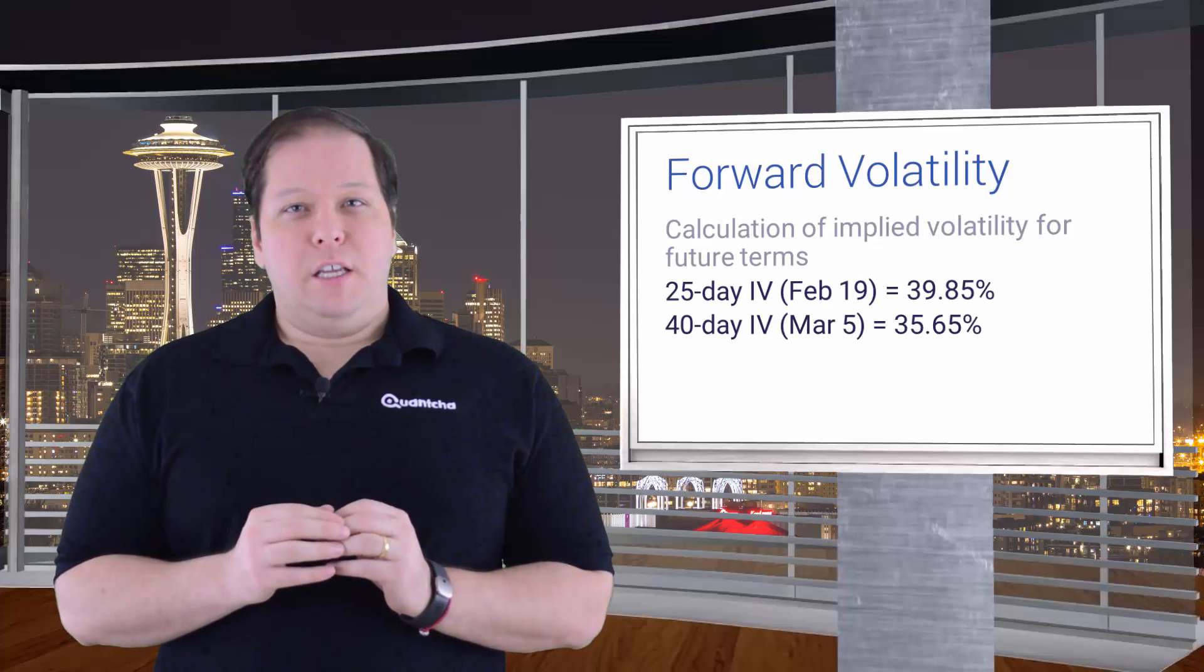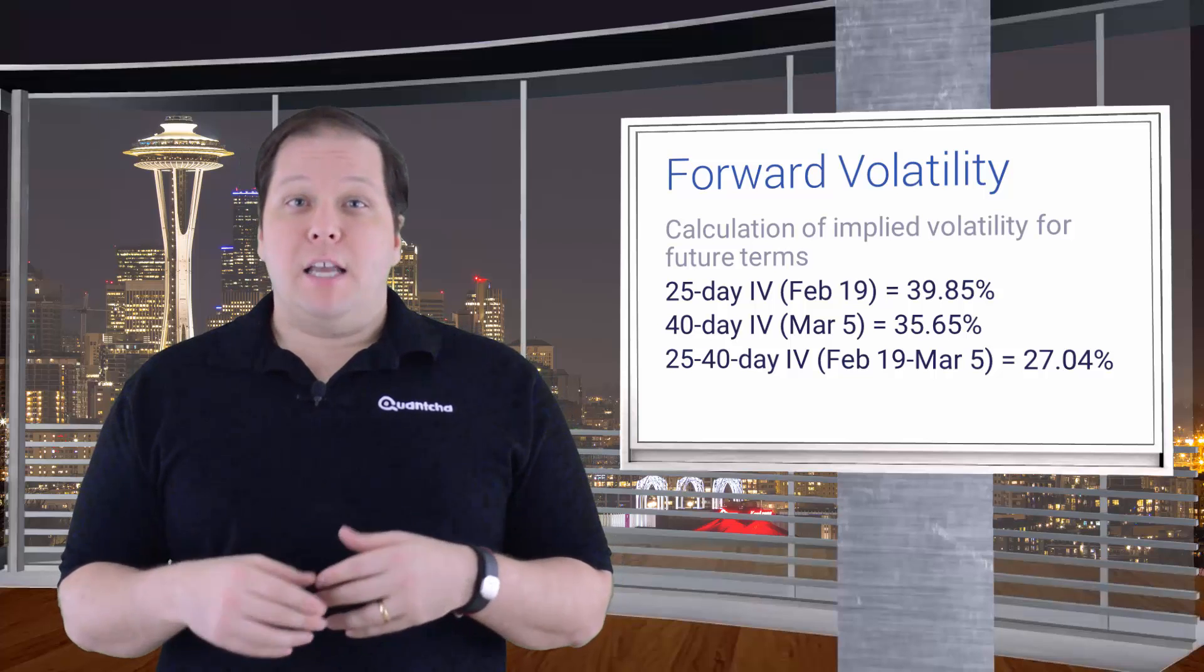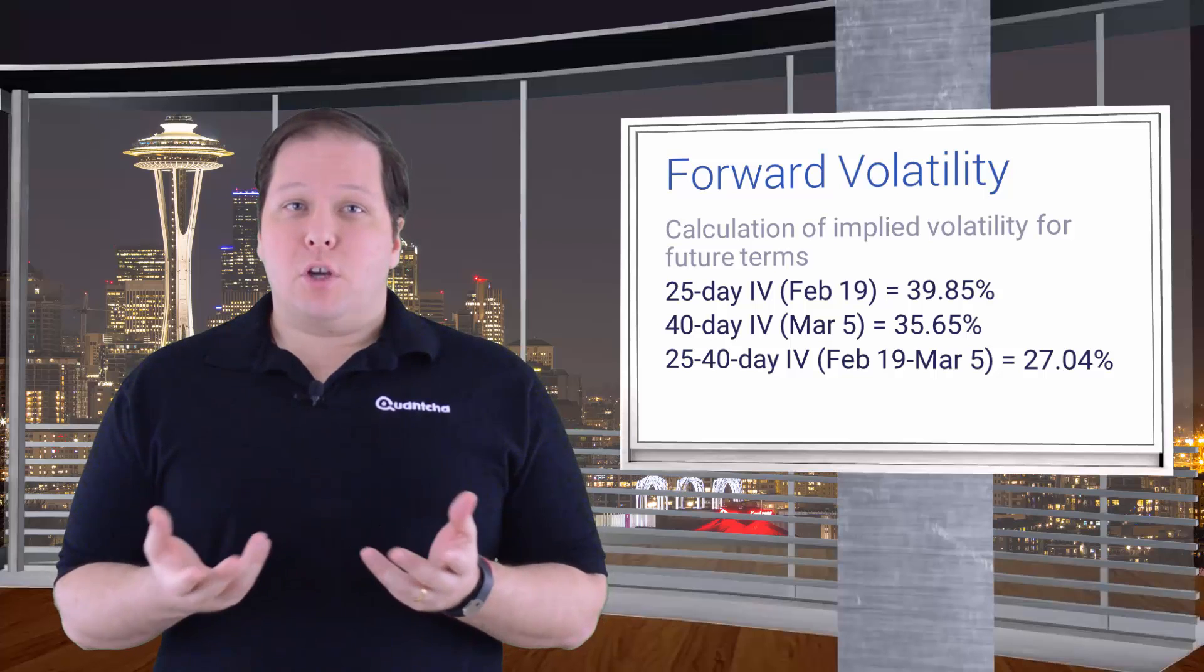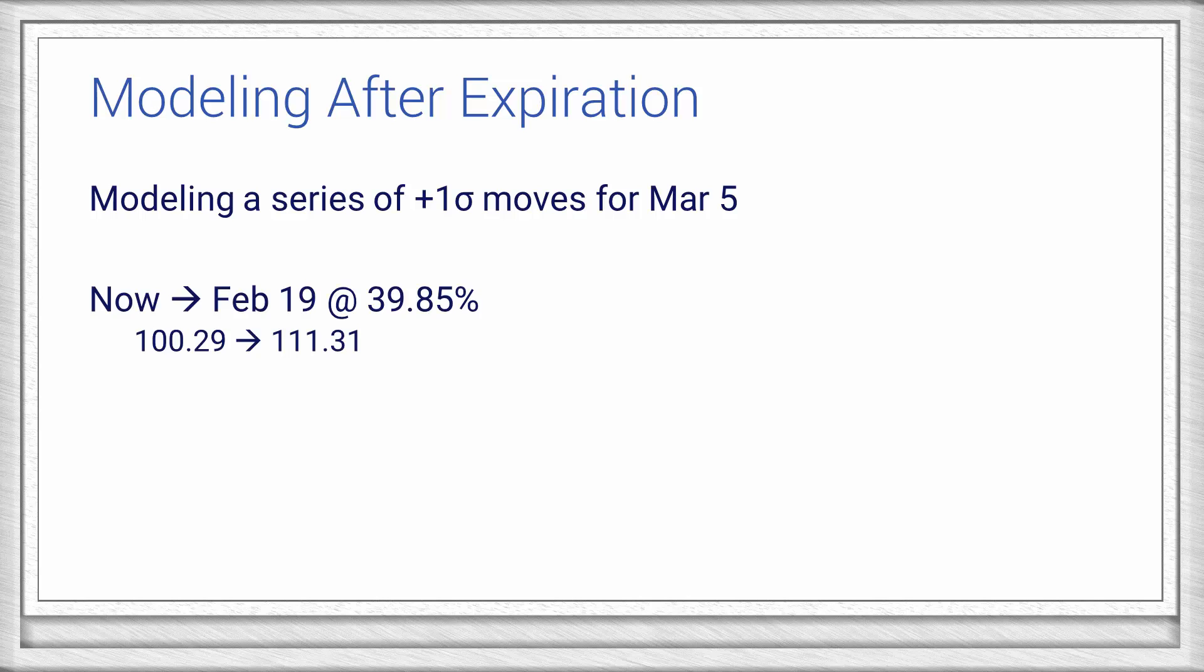With a forward volatility, we can then infer the price distribution for the end of that term relative to any starting price. The forward volatility completes our needs for the current sample. Now let's walk through the process of modeling another price path for evaluation. To keep things easier to understand, we'll work in terms of a single standard deviation move upward in each segment.